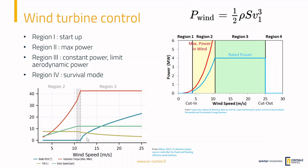Then we get to region 3. In green you can see the rotor speed — in this region we don't want to spin the rotor any faster. We keep constant speed and constant torque, which means constant electrical power delivered to the generator. To reduce the lift and prevent further rotor acceleration, we pitch the blades. This creates some stalling on the blade and keeps lift at a constant value even as wind speed increases. So to summarize: in region 2 we act on generator torque, and in region 3 we act on blade pitch.